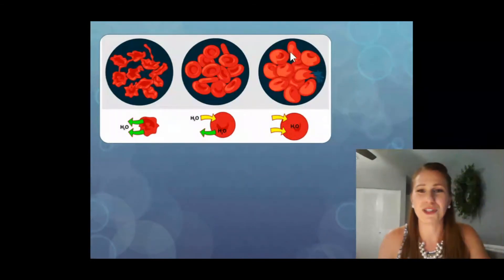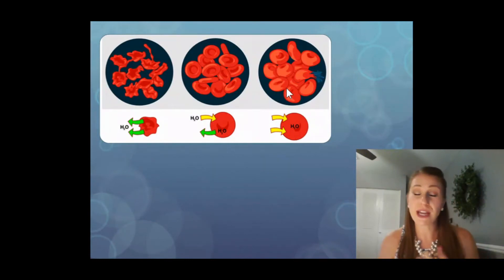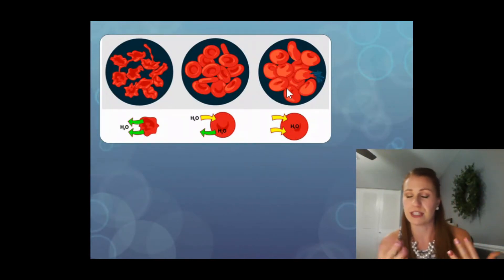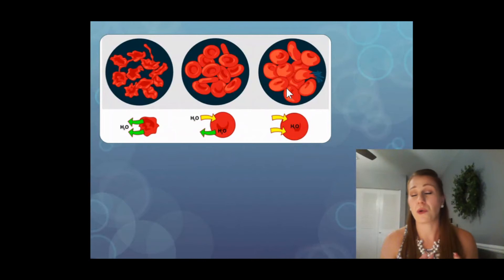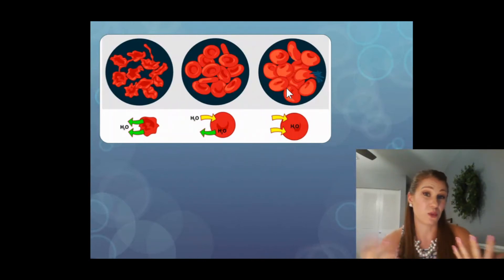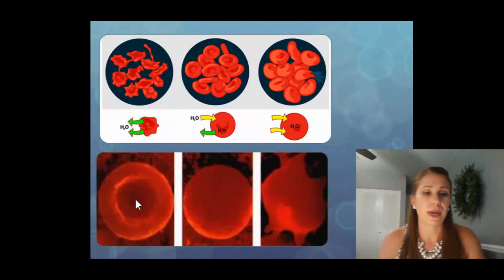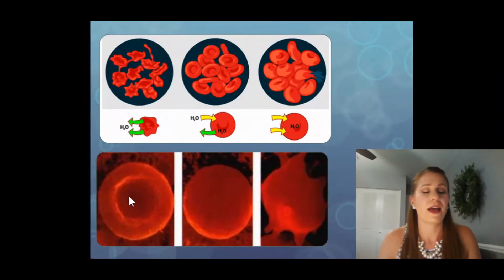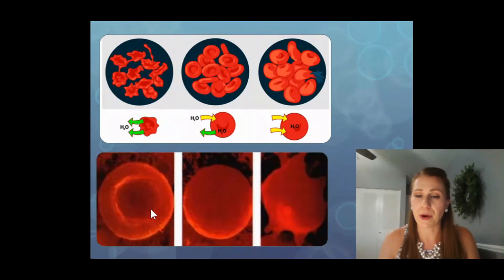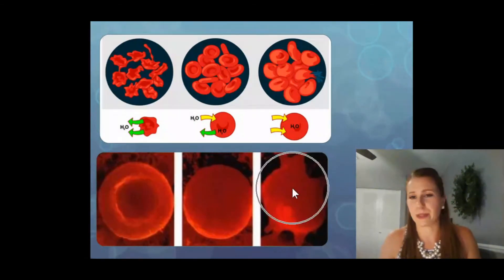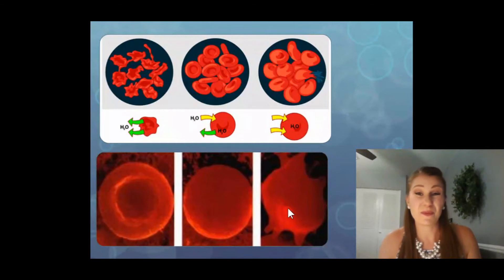Cells don't keep getting bigger and bigger as they fill with water — they will pop. You can actually make yourself very sick by drinking too much water — you have to drink gallons for this to happen — or by injecting yourself with water, because your blood cells will essentially explode. Here we have a normal blood cell in the middle — it's isotonic. Here we have a shrunken blood cell from a dehydrated person. And over here, this blood cell has lysed or burst because there was too much water surrounding it.